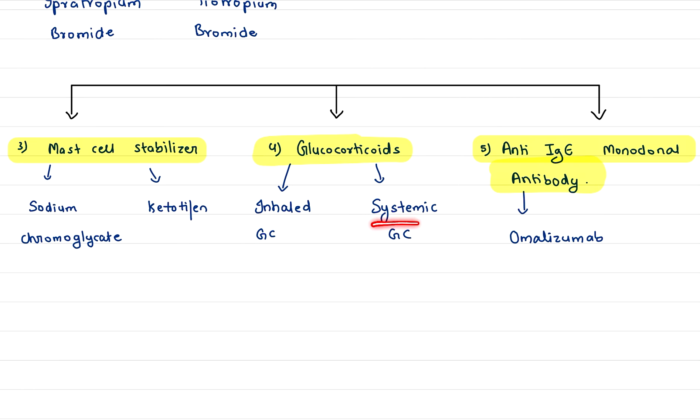Glucocorticoids include inhaled and systemic types. Under inhaled glucocorticoids, we have beclomethasone, ciclesonide, and budesonide. Under systemic, we have hydrocortisone, prednisolone, and methylprednisolone. For anti-IgE monoclonal antibody, we have omalizumab.